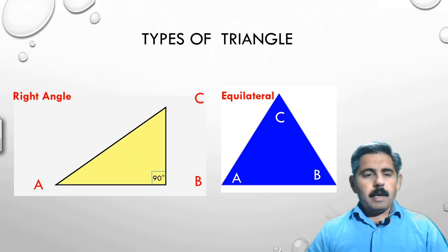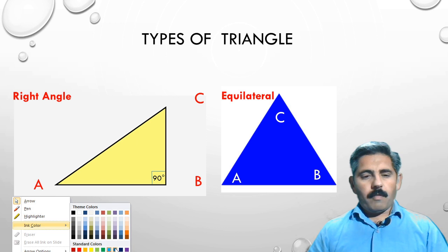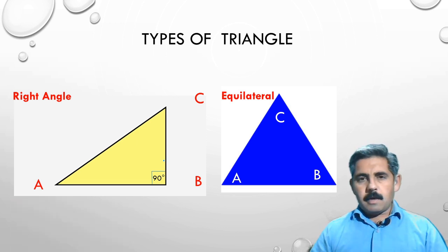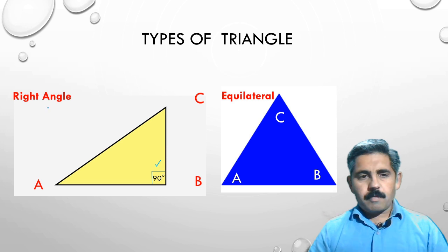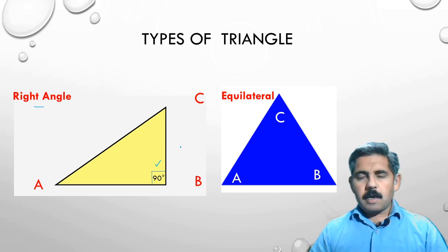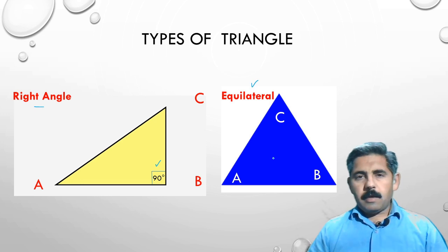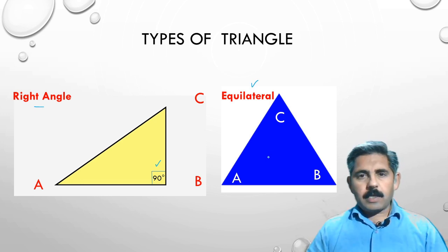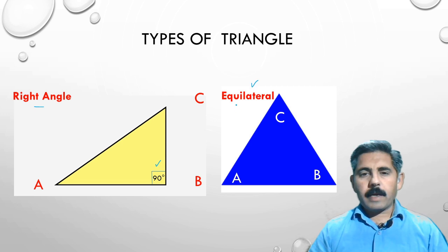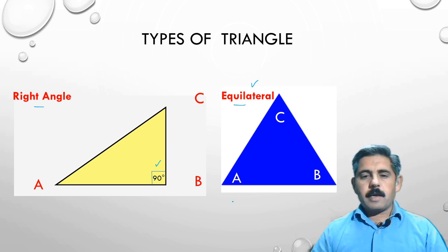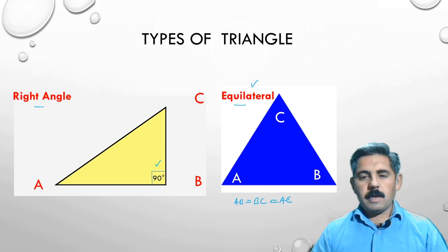A right angle triangle is one in which one angle is 90 degrees. This type of triangle is known as a right angle triangle. An equilateral triangle is a triangle in which all the sides are equal — ab is equal to bc is equal to ac — known as an equilateral triangle.